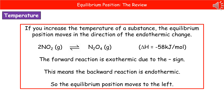Therefore, if we want to know what happens when we increase the temperature, it's going to be the backwards reaction that moves — because if the forward reaction is exothermic and has the negative sign, the backwards reaction must be endothermic. So in this case, if we increase the temperature, the equilibrium position will move to the left.